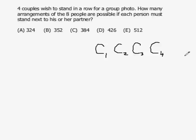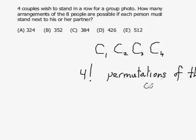Now, how many ways can I arrange these couples? This is a permutation of four couples. So there are four factorial, four times three times two times one, which is one times two times three, that's six times four, 24. So there are 24 permutations of the couples.